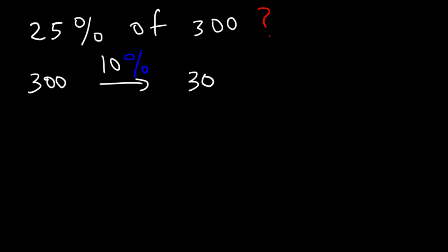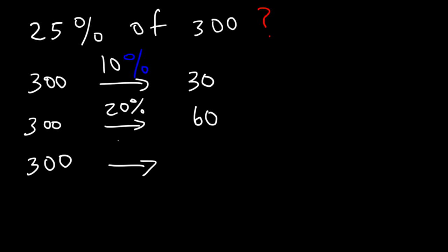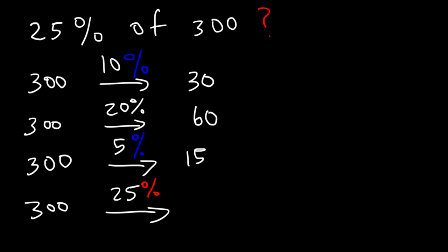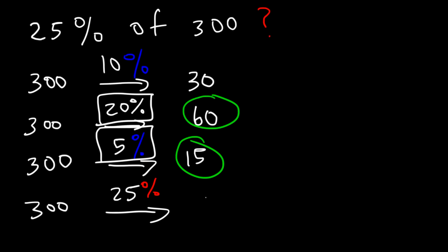If 10% is 30, then 20% is twice that value, so 30 times 2 gives us 60. Now to get to 25%, we need to find 5%. 5% is half of 10%, so half of 30 is 15. Since 25 is the sum of 20 and 5, we add 60 and 15.